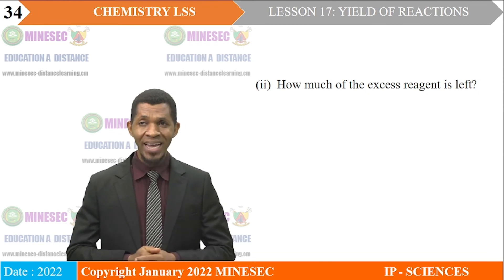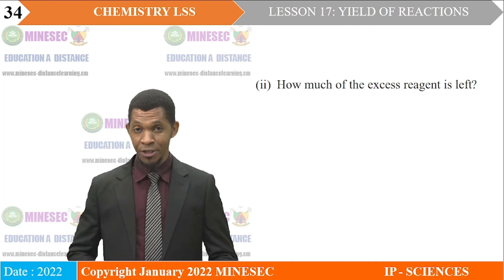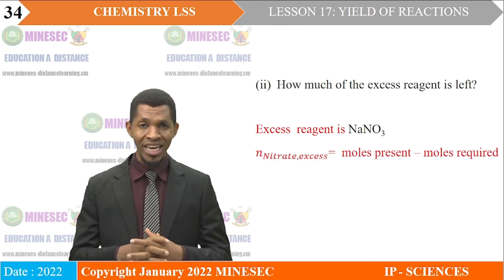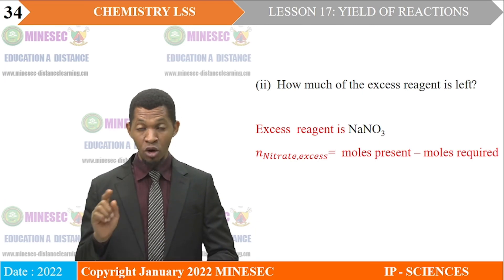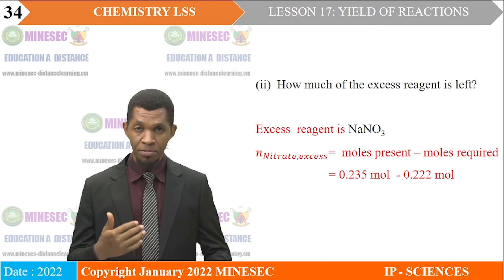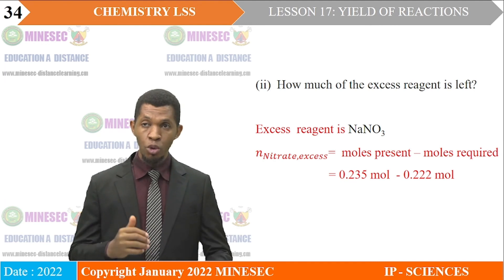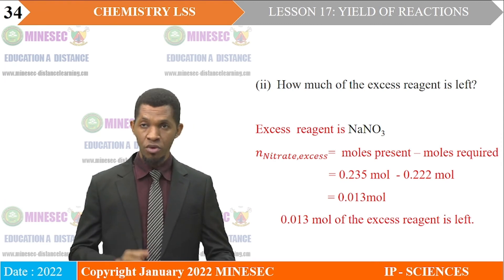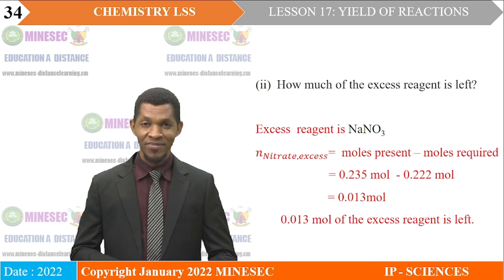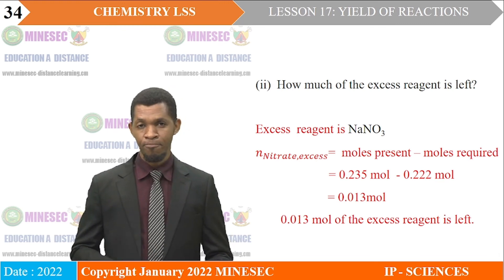Part B — how much excess reagent is left? The excess reagent is sodium nitrate. Moles of NaNO₃ in excess = moles present − moles required = 0.235 − 0.222 = 0.013 moles. So 0.013 moles of sodium nitrate was left after the reaction.